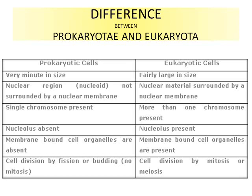Differences between prokaryotic and eukaryotic cells: In size, prokaryotic cells are very minute while eukaryotic cells are fairly large. Regarding the nuclear region, prokaryotic cells are not surrounded by a nuclear membrane, whereas eukaryotic cells have nuclear materials surrounded by a nuclear membrane. Prokaryotic cells have a single chromosome as they do not reproduce sexually, while eukaryotic cells have more than one chromosome.